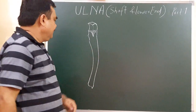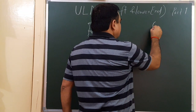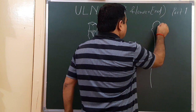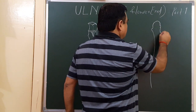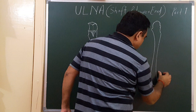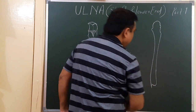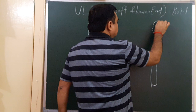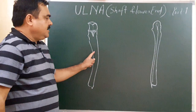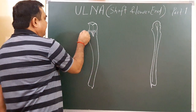Here is the anterior view of the ulna and here is the posterior view of the ulna. This is the posterior view, and here is the position of the radius.